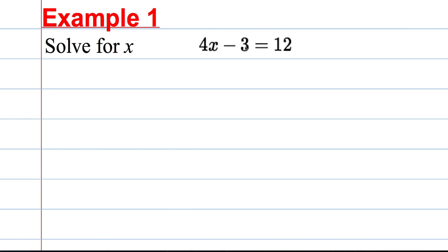4x subtract 3 is equal to 12. We're using the balance method here. What we're going to do is we're going to add 3 to both sides of the equation. Write down what you're doing. You're adding 3. That way you would get 4x, this would now be 0 and you would get is equal to 15. 4 lots of x are 15. So to get 1 lot of x you divide by 4.